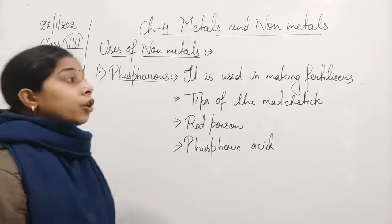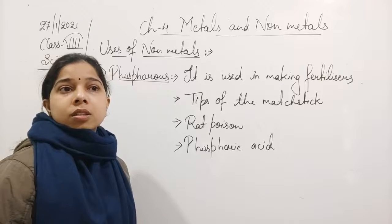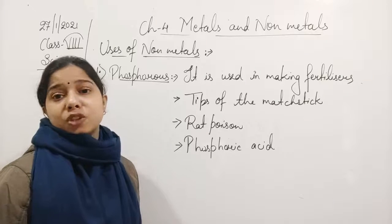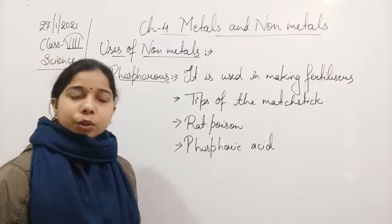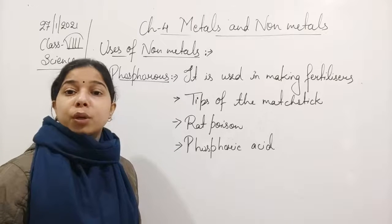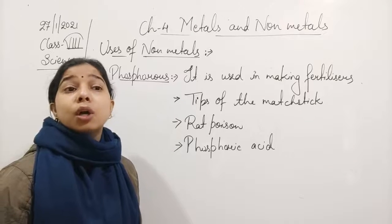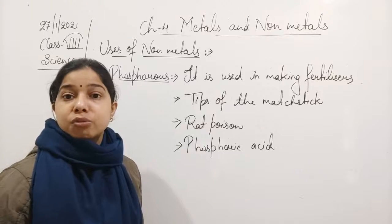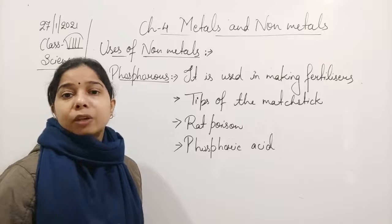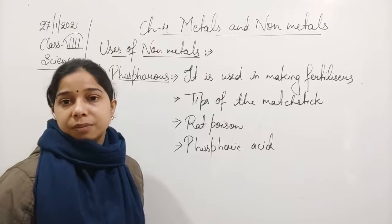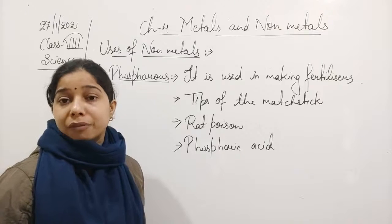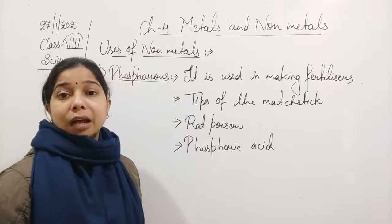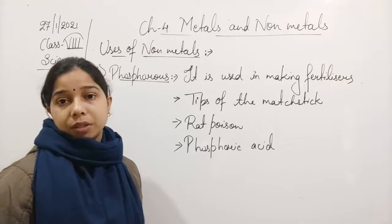The next non-metal is chlorine. Chlorine has bleaching action, and because of this it is used for purifying water. You have heard about chlorination, where chlorine gas is released to kill the microbes present in the water. It is also used in making bleaching powder.